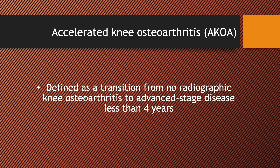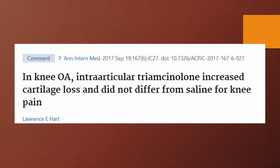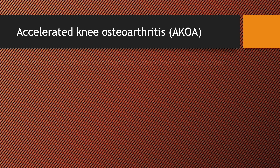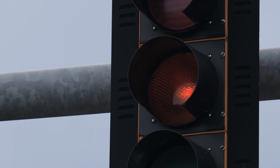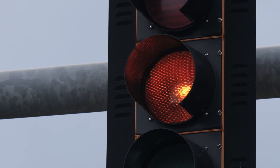If you have tried intra-articular steroid injection without good results, patients may blame steroids as the cause of rapid progression of knee osteoarthritis. Accelerated osteoarthritis shows rapid articular cartilage loss, larger bone marrow lesions, effusion synovitis, and more meniscal pathology than typical knee osteoarthritis. Increased joint symptoms following new joint trauma with a destabilizing meniscus tear may also develop accelerated knee osteoarthritis. Your patients will complain of worsening disease in early-looking osteoarthritis, so it is best to warn of this possibility in advance.